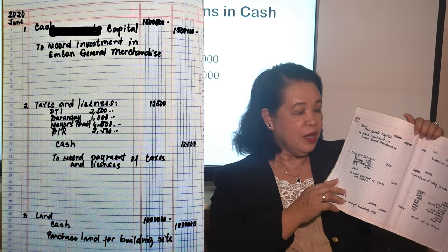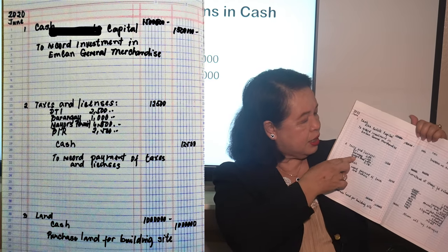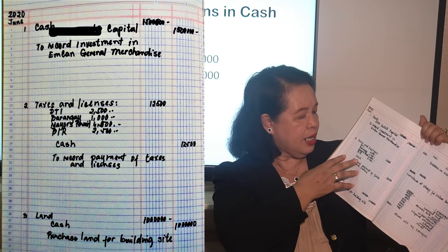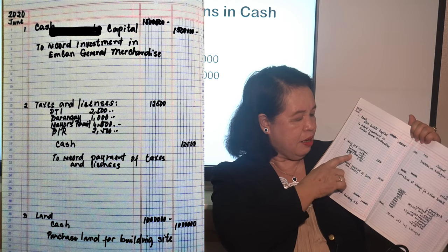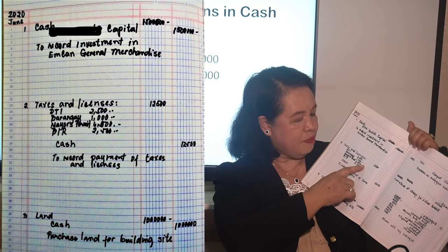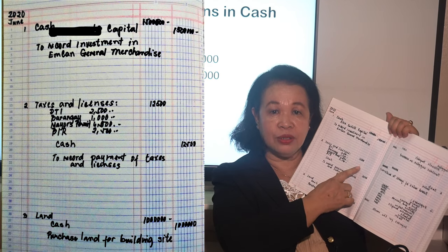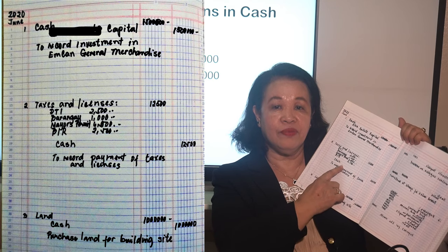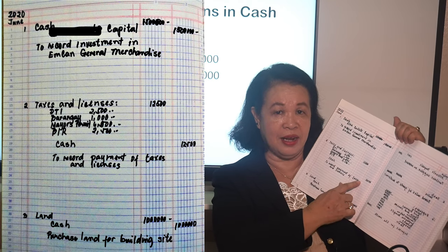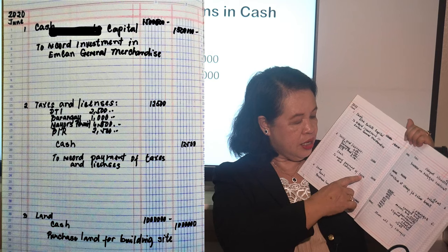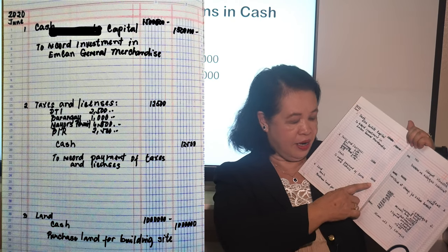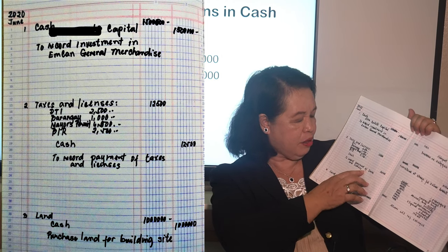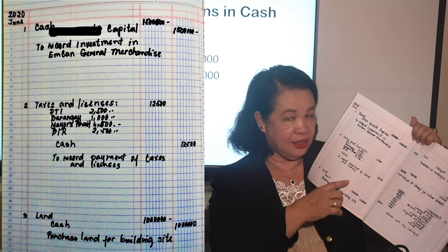The second transaction: I paid taxes and licenses. I got a DTI permit, barangay permit, mayor's permit, and paid the BIR. How much did I spend? 12,500. From the 12,500, where did it come from? Of course, I paid in cash. So I credit cash 12,500. The explanation: 'To record payment of taxes and licenses.'